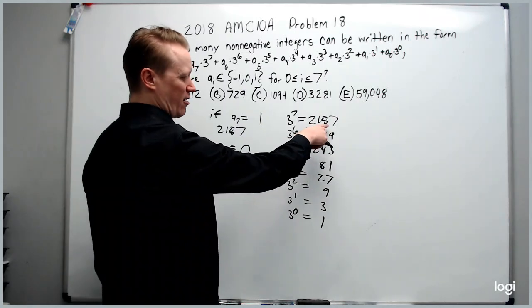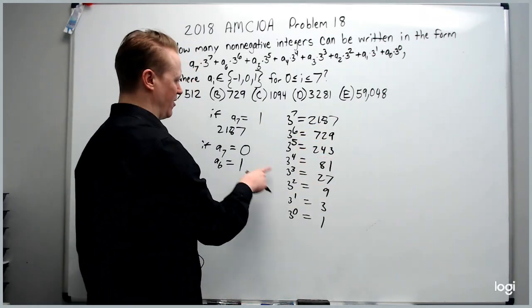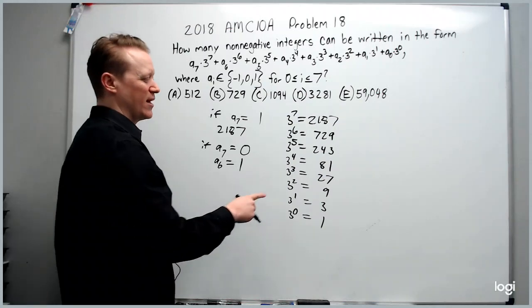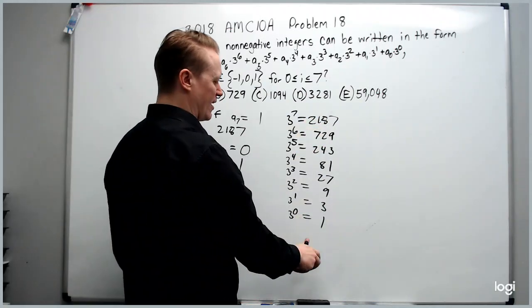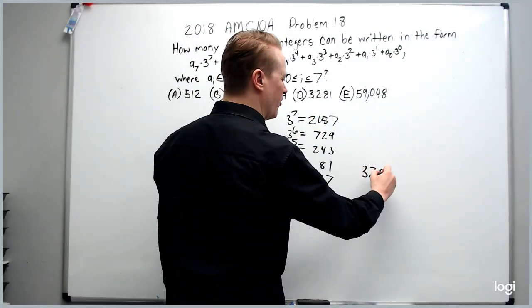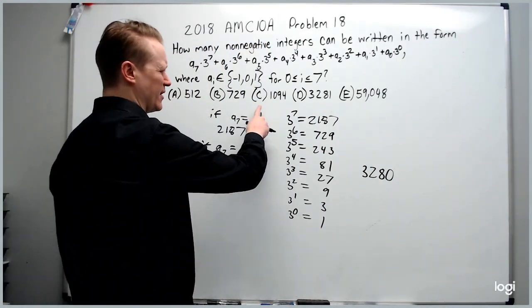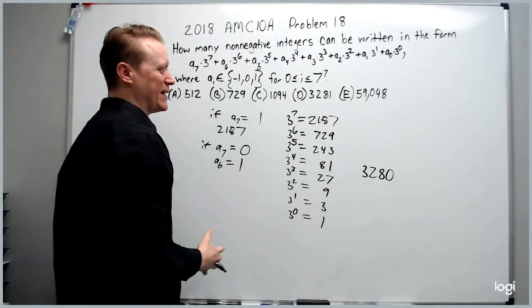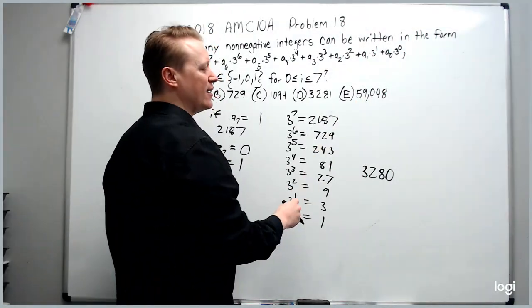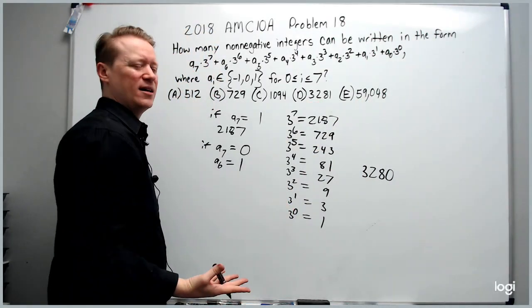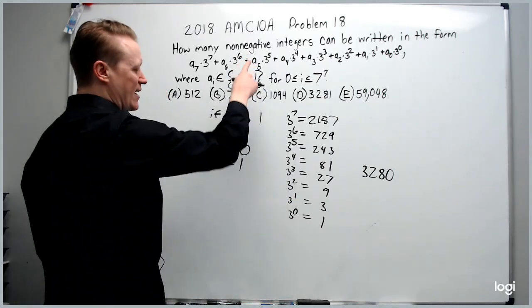In each scenario, we're going to get this amount, this amount, and all the way down that many integers. If we add all of this up though, we only get 3280. So where do we get from the answers, you can tell it must be D, it's clearly not E. So how do we get the extra 1 though? Well again, it said non-negative.